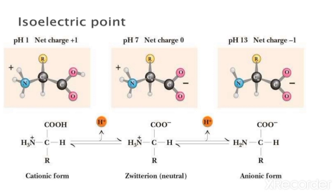In acidic medium, the amino acid has a positive charge generated by the basic group. In neutral medium, positive and negative charges appear and both cancel out — this is the condition of the zwitterion.